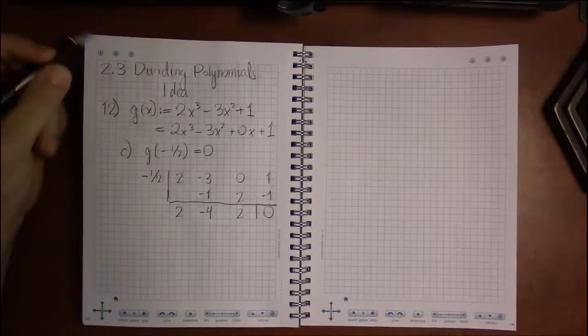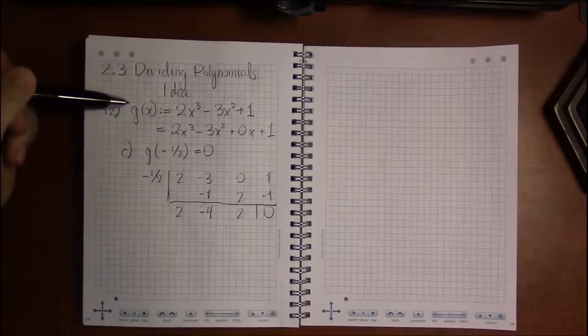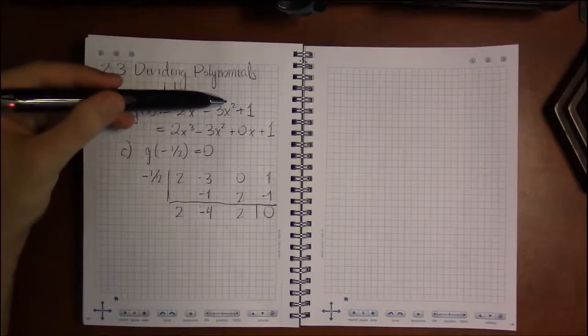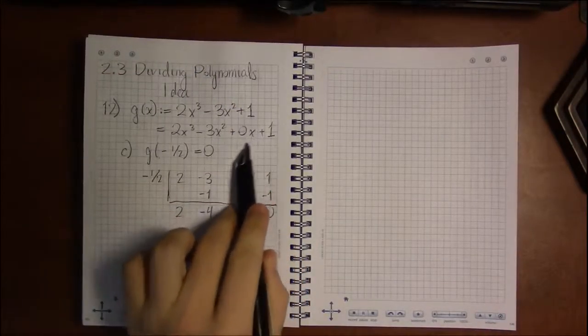All right, so let's start up where we left off in the last video, namely that we were given a polynomial 2x³ - 3x² + 1, and this required a placeholder for x, so we added in the 0x.